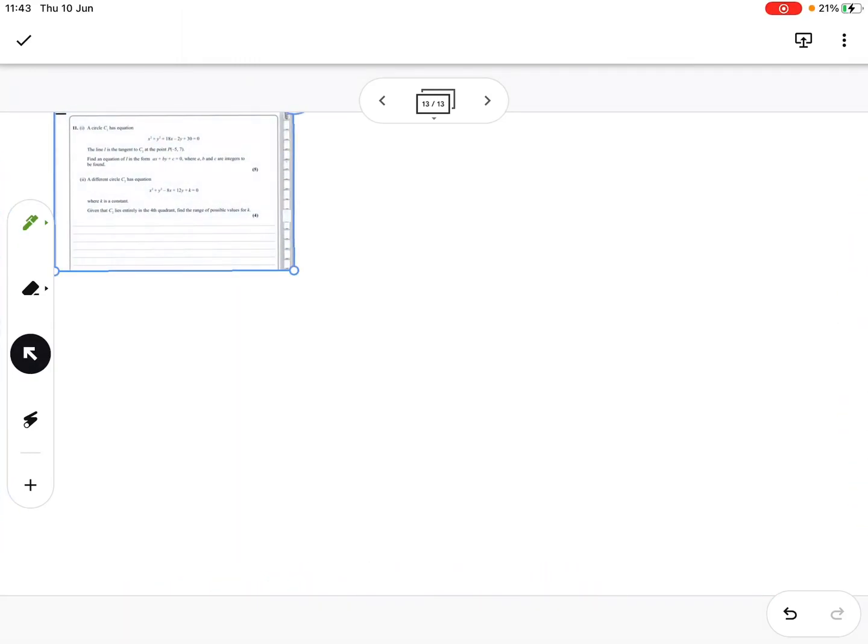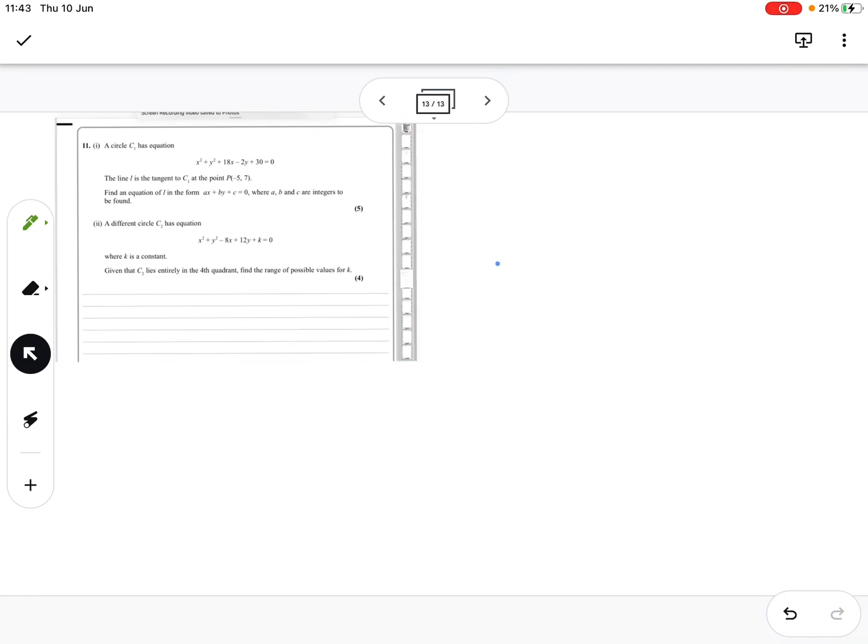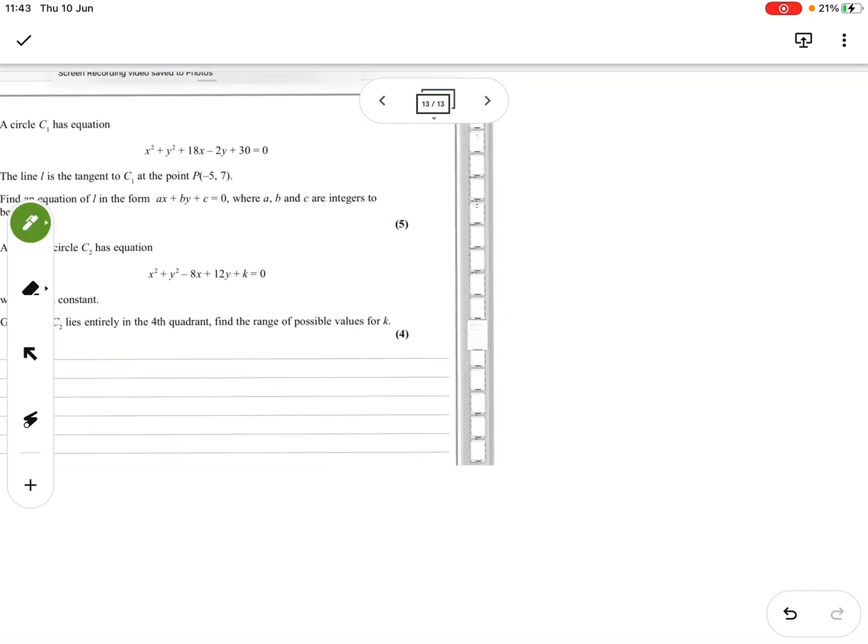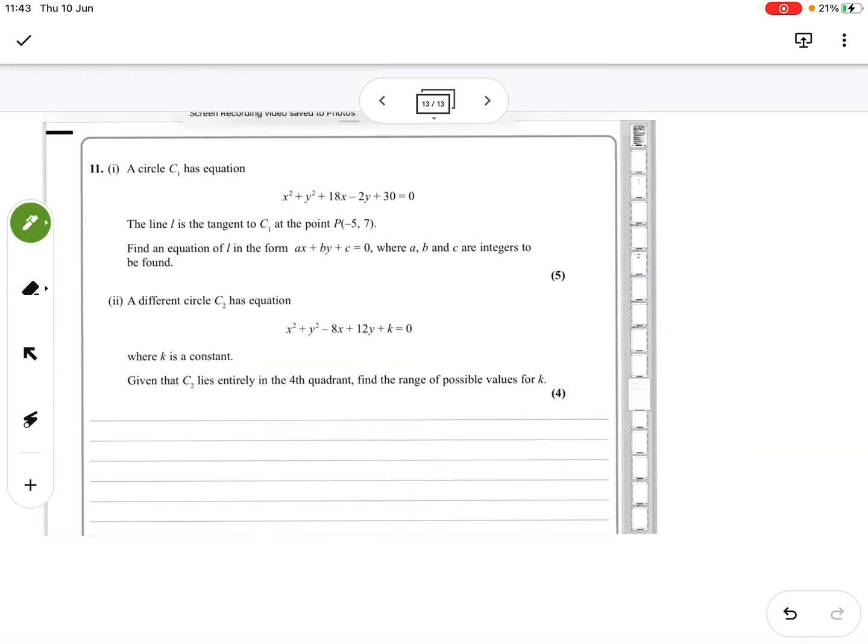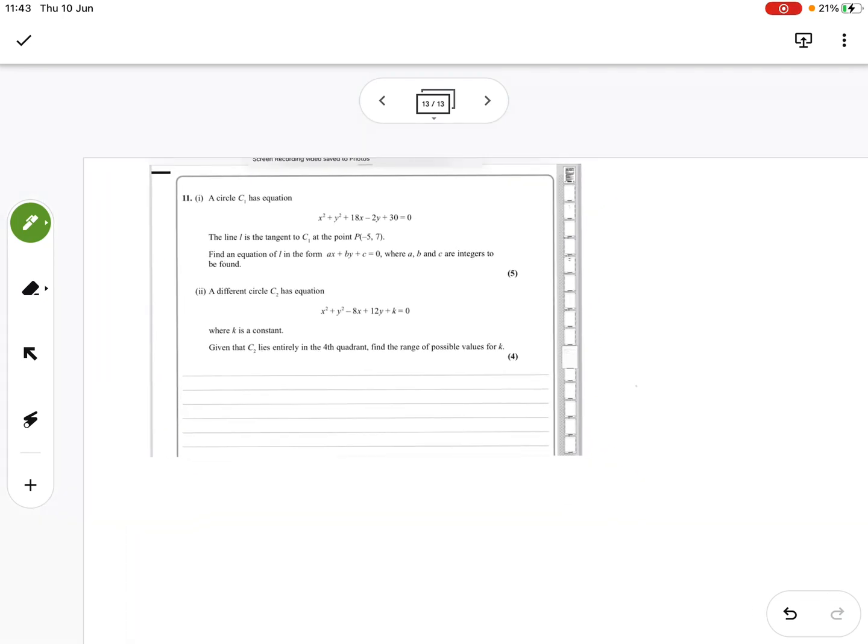Here we go again, I'll try not to muck this up. So we have an equation of a circle. There's a tangent to it. Find the equation of the line L in the form where it touches the point.